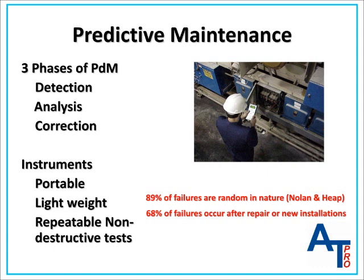The detection phase is the most important phase. In this phase, the goal is to simply identify machines with developing faults. These faults should be identified with enough time remaining to remove the machine from service before a complete failure occurs. To maximize the effectiveness of the program, it is important to survey as many machines as rapidly as possible. The faster these surveys can be performed, the more machines can be monitored.